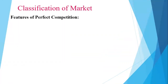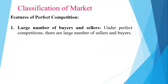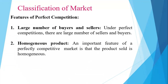The first feature of perfect competition is large number of buyers and sellers. Under perfect competition, there are a large number of sellers and buyers. The number of sellers is so large that a single seller cannot influence the market supply, and the number of buyers is so large that a single buyer cannot influence the market demand. Each buyer and seller is a price taker who has to accept the price determined by the forces of demand and supply. A single seller or buyer can buy or sell any quantity of commodity at a given price.